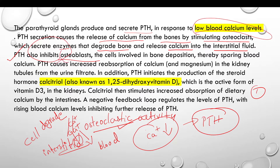PTH inhibits osteoblastic activity — that means it inhibits the deposition of calcium in bone — thereby sparing blood calcium. If calcium is not deposited in bone, it remains available in the blood.